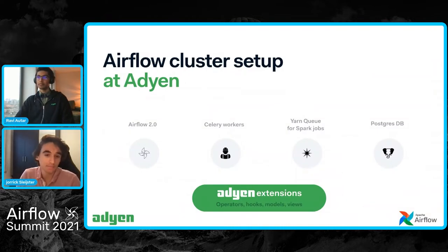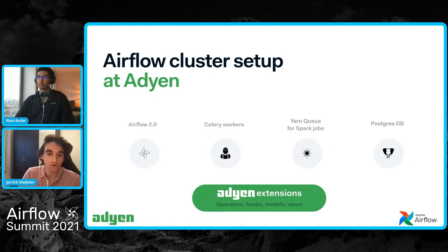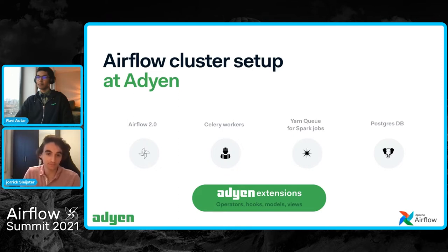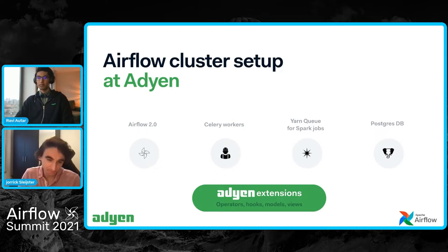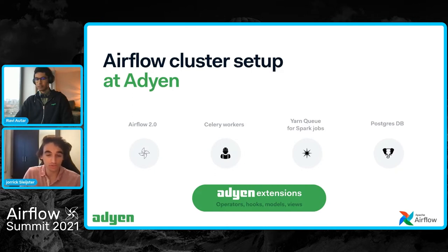Our airflow cluster setup: we migrated to Airflow 2.0 a month ago and it's been quite smooth sailing. As we're on premise, we're not using containers yet, and therefore we're using Celery workers. We also have a large YARN queue for Spark jobs, and Airflow is backed up by a Postgres database. What we'll mostly be talking about today is the AdGen extensions we have on top of the Airflow platform — operators, hooks, listeners, database events, and models and views specified in a plugin. The Airflow upgrade from 1.10 to 2.0 was very smooth, and we had to make minimal changes to the plugin, which shows the extensibility of Airflow.